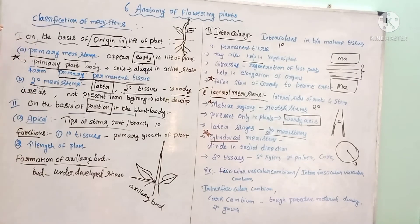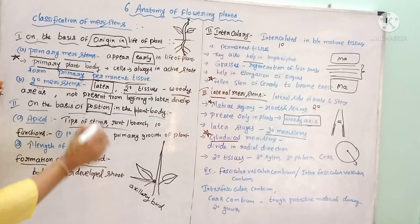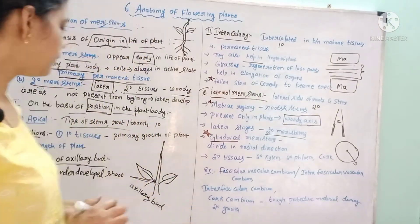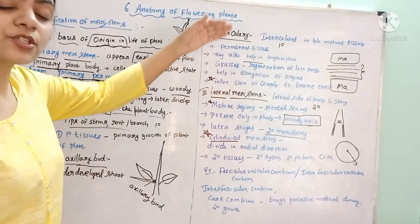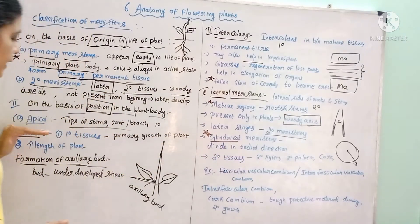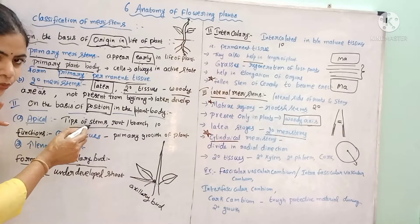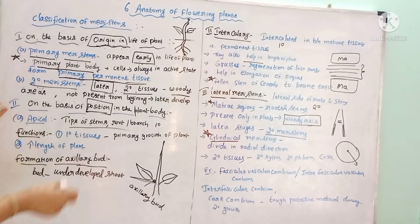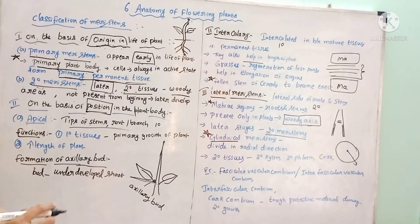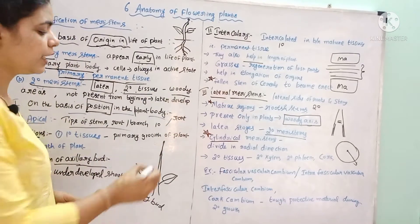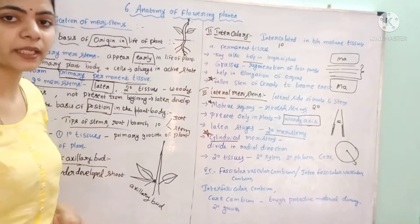The second classification is based on the position in the plant body — where the meristematic tissue is developing. Based on this reason we have three different types of meristems. The first is apical meristem. The name indicates 'apical' means tips. The meristems which develop at the shoot tips, root tips, and branch tips are called apical meristems. If it develops at the root tips it is called root apical meristem; if at the stem tips, it is called shoot apical meristem.